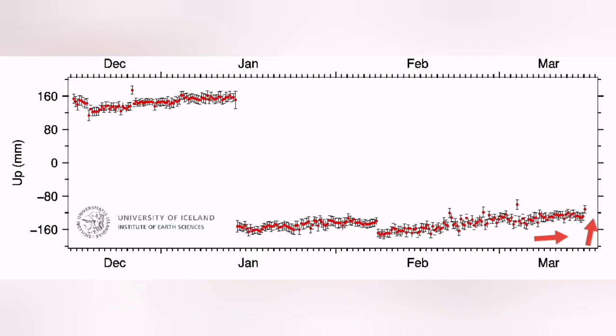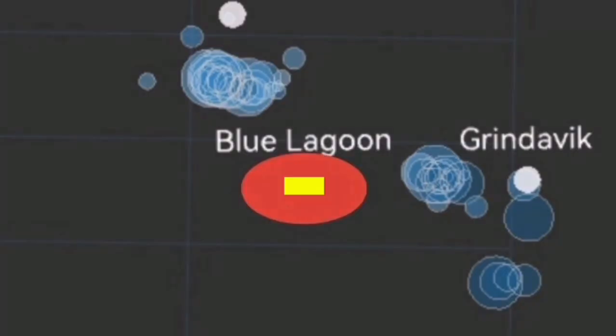Further down toward the east of Grindelbeck, we have AUSV, which shows some uplift due to magma accumulation, not as much as the previous one.